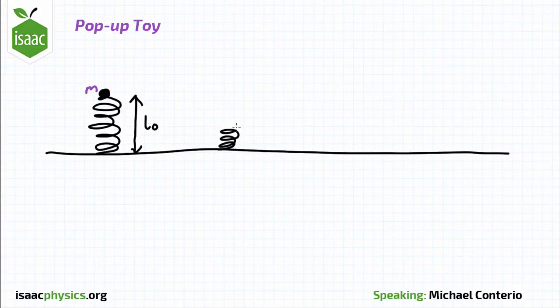In the second situation, we have the same mass, still stationary, but the spring has been compressed so that it only has a length L1.